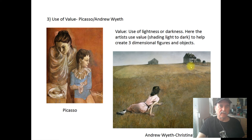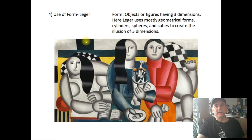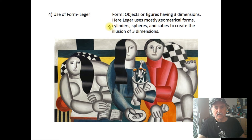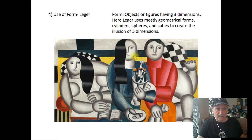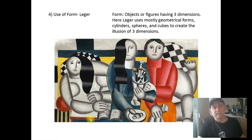Moving on to the use of form or three dimensions: the artist is Léger, and here he uses cylinders, spheres, and cubes to create the illusion of three dimensions. This woman's face is definitely a sphere, and this man's face here also. This area looks like a table — a cube or cube-like shape — and the body parts are also very geometrical, made up of geometrical shapes.